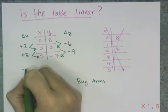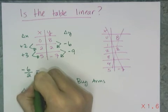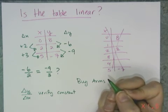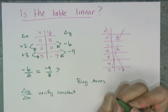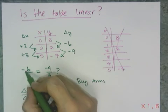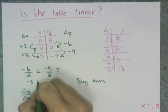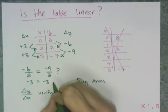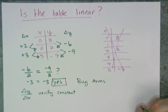So now that I have all my changes in y's and my changes in x's, what I'm going to do is I'm going to check the ratios. So the question now becomes, is negative 6 over 2 equal to negative 9 over 3? If they are equal, then this table does represent a linear function. And negative 6 over 2 is negative 3, and negative 9 over 3 is negative 3. So that means that, yes, this is indeed linear.